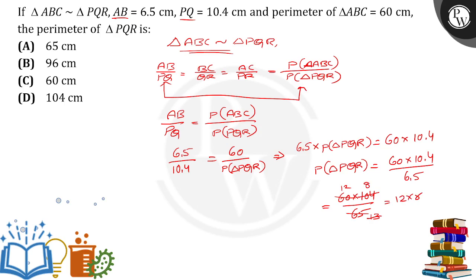Therefore, the perimeter of triangle PQR is equal to 96 centimeter, so option B is the right answer. Thank you.